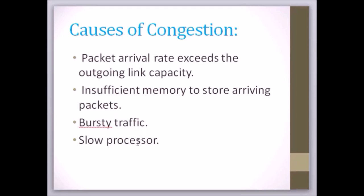Fourth, congestion in a subnet can occur if the processors are slow. Slow speed CPUs at routers will perform the routing tasks such as queuing buffers and updating tables slowly. As a result of this, queues are built up even though there is exit line capacity.